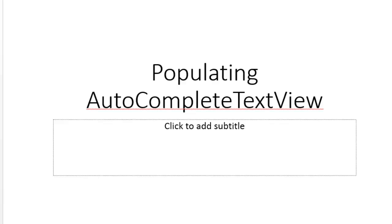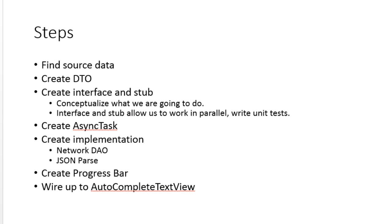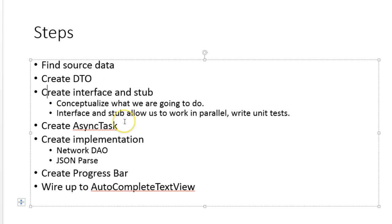In this video, we're going to continue our discussion of how to populate an autocomplete text view. We are now on the step where we're creating an interface and a stub. A stub is basically a prototype of a program, something you can create to simulate what a program will do, or a part of a program. Then we're going to make an interface out of that, and that interface and stub allow us to work in parallel.